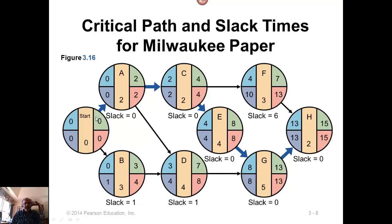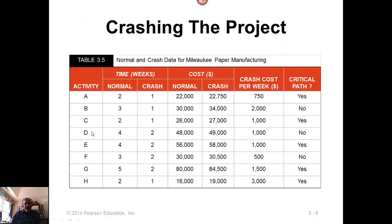In our example, the critical path is A, C, E, G, H. Looking at the table, of those critical activities, A has the smallest crash cost — not F, because F is not a critical activity. You can crash A, and the amount of crashing allowed is one week. Repeat this process until the desired completion time is achieved.